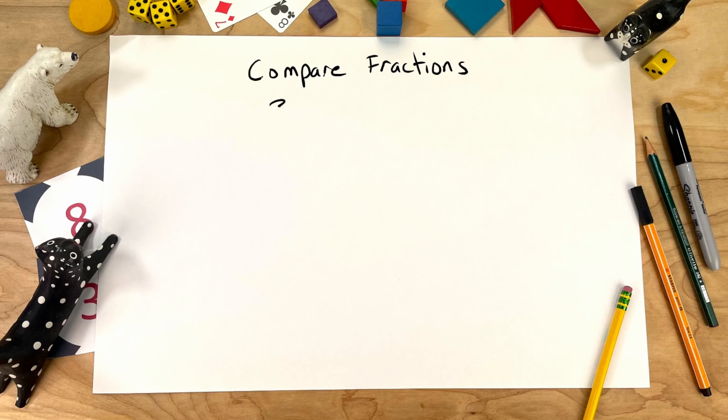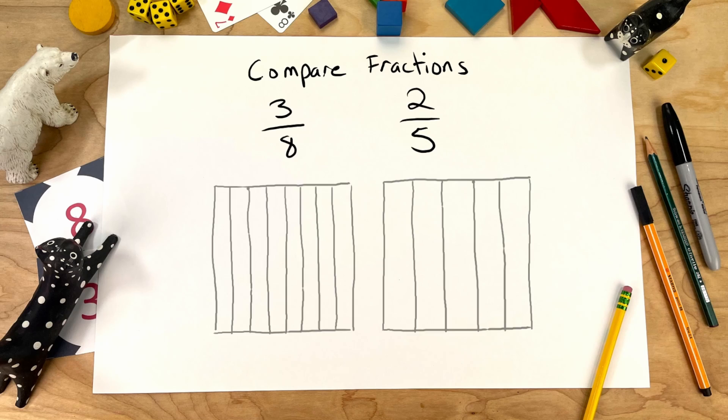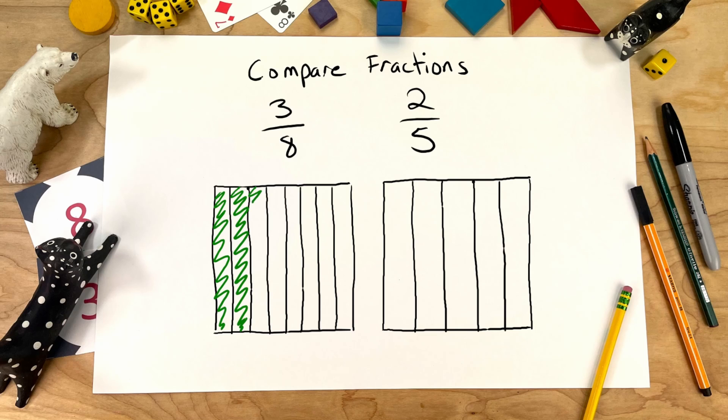Let's think about 3 eighths and 2 fifths. So, this is what 3 eighths looks like. 1 eighth, 2 eighths, 3 eighths.